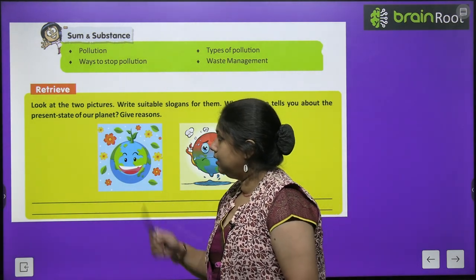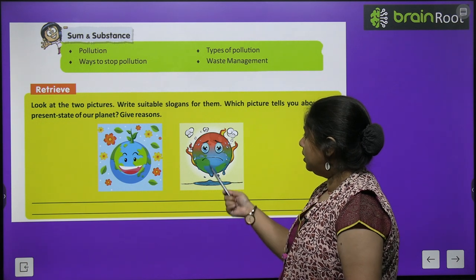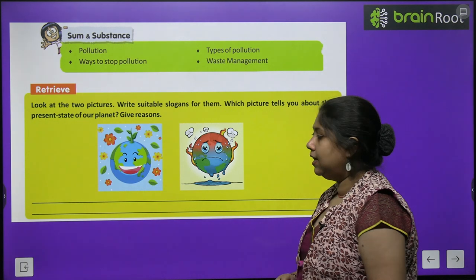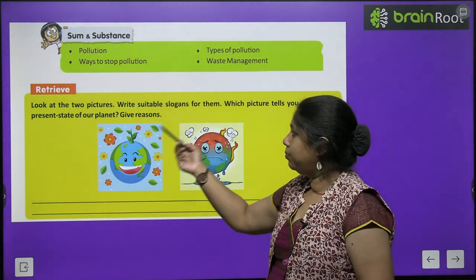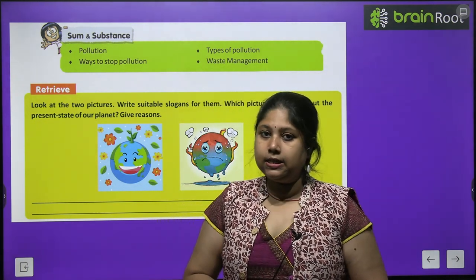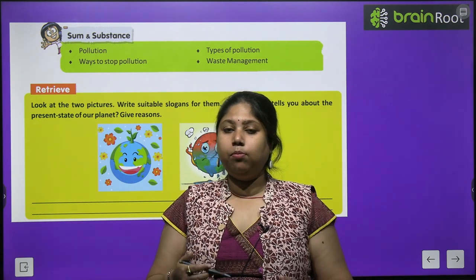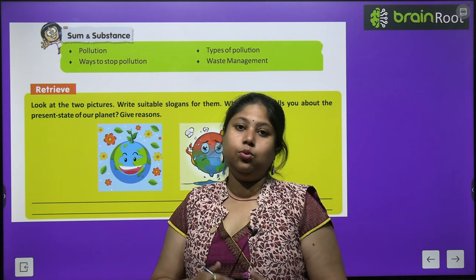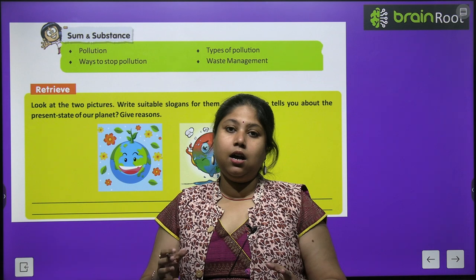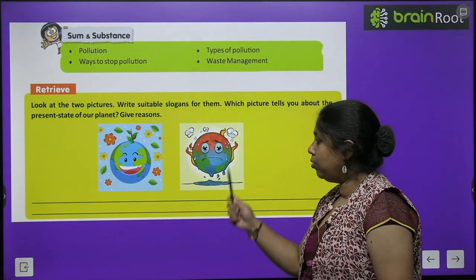Before we begin, let's look at these two pictures. In one, the earth is quite flowering — it is happy and cheery. In another, the earth is burning and crying. You have to develop slogans for them. Aapko in dono pictures ke liye alag alag slogans likhne hain. The second picture shows the present state of our planet. We have to bring her back to this smiling condition.